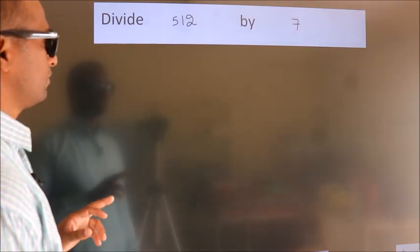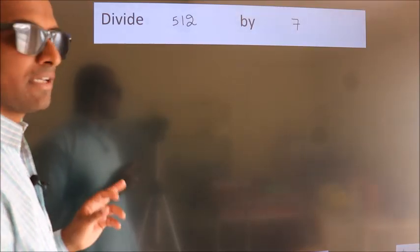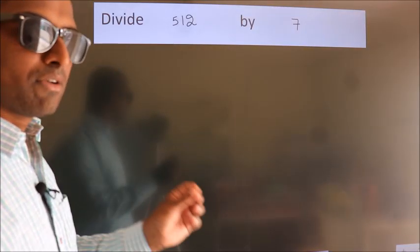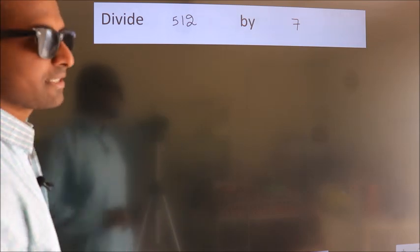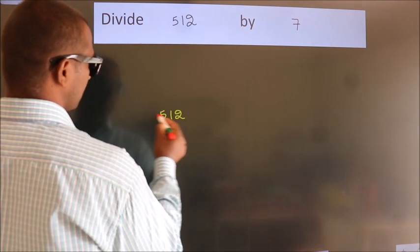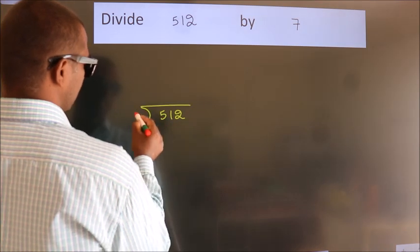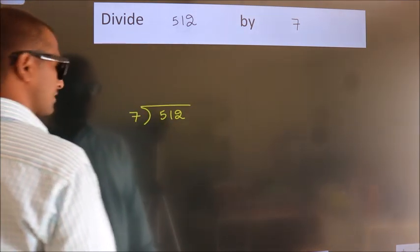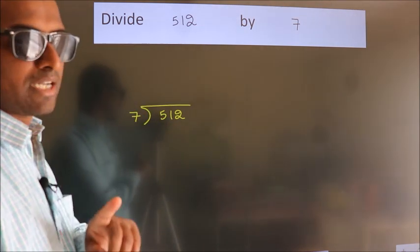Divide 512 by 7. To do this division, we should frame it in this way. 512 here, 7 here. This is your step 1.